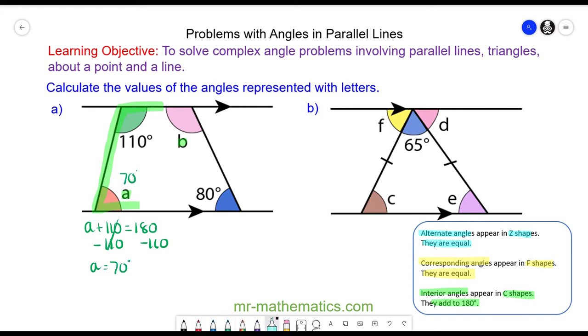And angle B is also interior but this time with the 80 degrees. So again they add up to 180. So angle B plus 80 is equal to 180 degrees. We can take away 80 degrees on both sides and these will cancel because they equal zero. So angle B will equal 100 degrees.